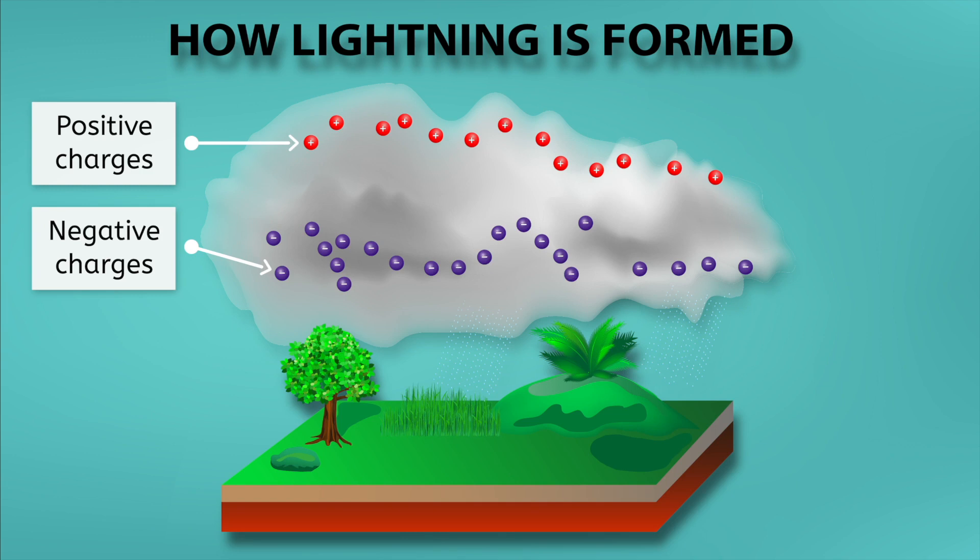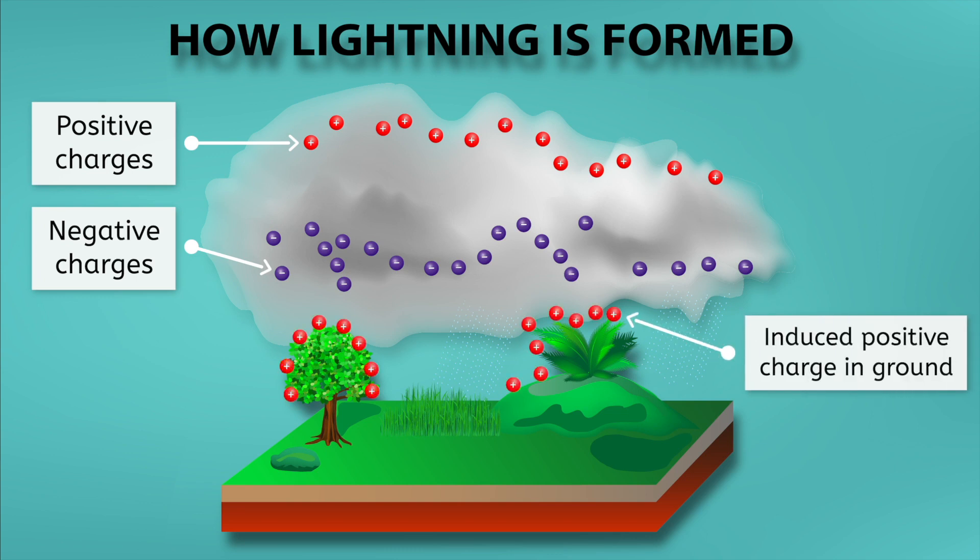The reason for this involves chemical and physical interactions that we won't delve into in this course, but this is the outcome. This induces a positive charge near the surface of the ground, as the positive charges already in the ground are attracted to the negative charges in the bottom of the cloud. When the attraction between these positive and negative charges becomes strong enough, a massive transfer of negative charges or electrons takes place between the cloud and ground, which we see as lightning.